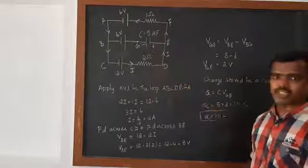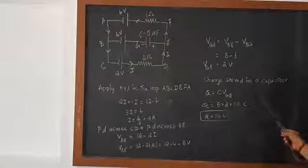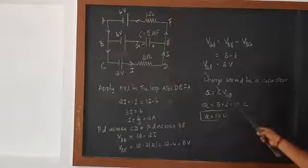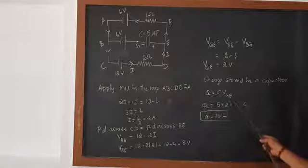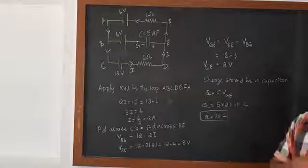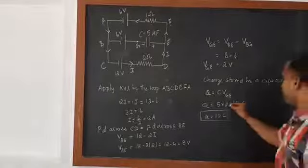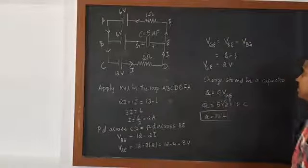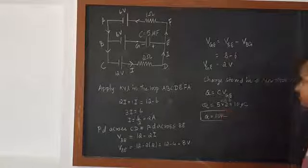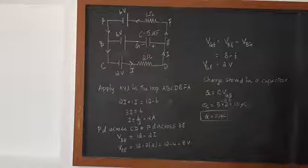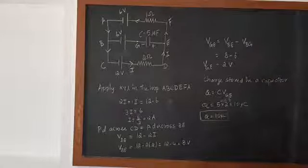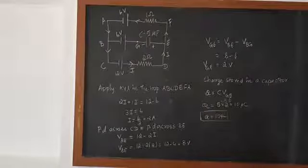The voltage drop across the capacitor is 2 volt. What they are also asking is the charge stored in the capacitor, using the formula Q equals CV. Here V is VGE, so Q equals C into V. The capacitance given is 5 microfarad, where micro is 10 to the power minus 6. So Q equals 5 into 10 to the power minus 6 into 2, which gives 10 microcoulomb. Q becomes 10 microcoulomb. I hope you understand well. See you in the next video.